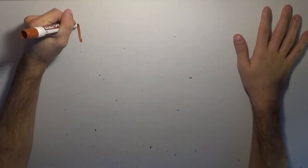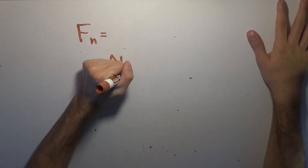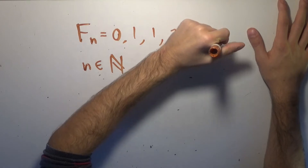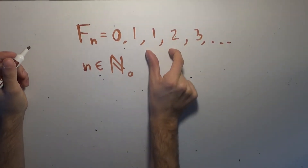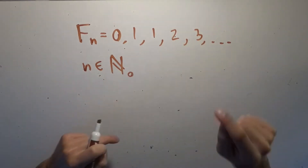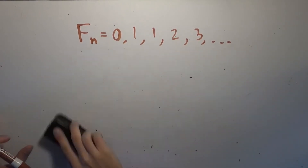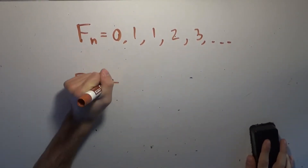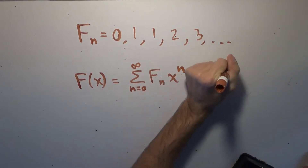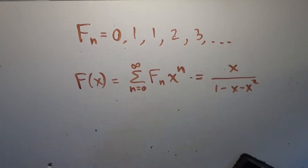So today we're going to explore a very, very neat generalization to the generating function that I showed for the Fibonacci sequence. The nth Fibonacci number starting at 0 — so n is in the set of natural numbers including 0 — the Fibonacci numbers are 0, 1, 1, 2, 3, etc., where each next term is achieved by adding the previous two together. 0 and 1 are seed values, so 0+1=1, 1+1=2, 1+2=3, etc.